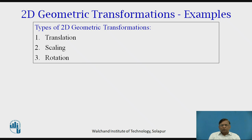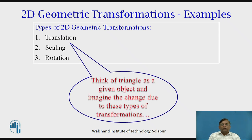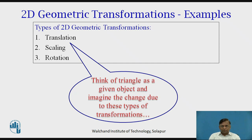These are the three transformations we will discuss with mathematical examples using the given data. At this point, I expect viewers to think of some object, like a line or a triangle, and consider how these geometric transformations will have an effect on that object.